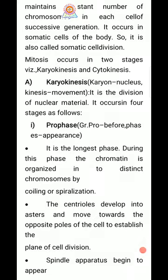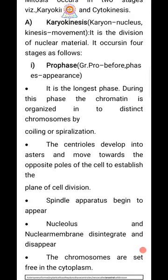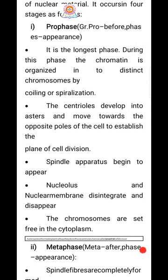During prophase, the chromatin is organized into distinct chromosomes by coiling or spiralization. The centriole develops into asters and moves towards the opposite poles of the cell to establish the plane of cell division. The spindle apparatus begins to appear. The nucleolus and nuclear membrane disintegrate and disappear, and the chromosomes are set free in the cytoplasm.